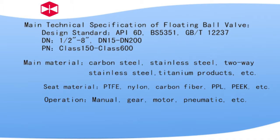GBT12237. DN 1.5 inches to 8 inches, DN15 to DN200. PN Class 150 to 600. Main material: carbon steel, stainless steel, 2-way stainless steel, titanium product, etc.